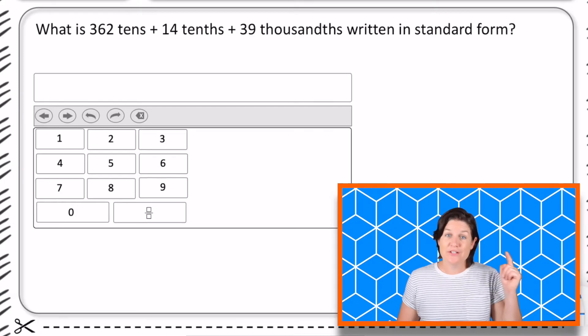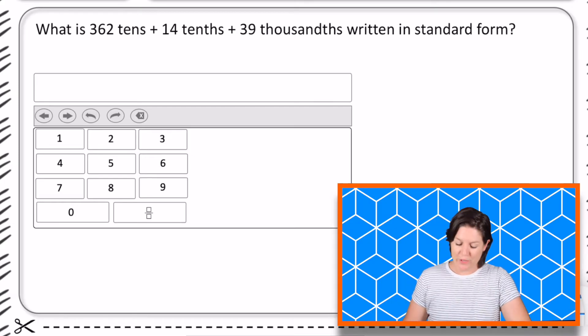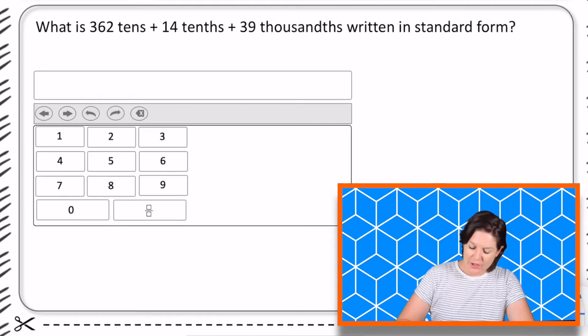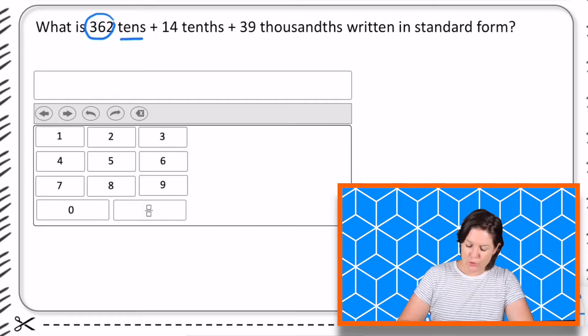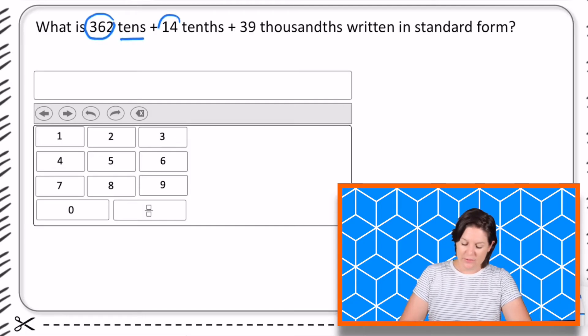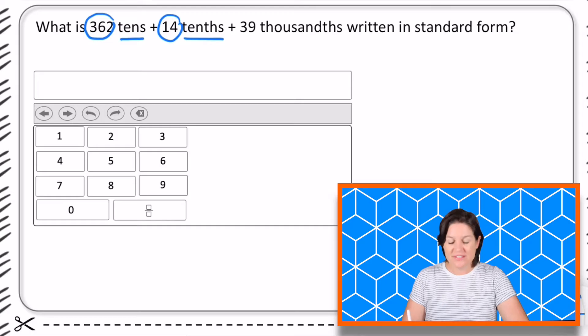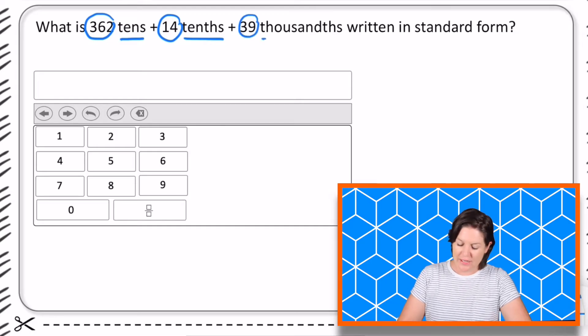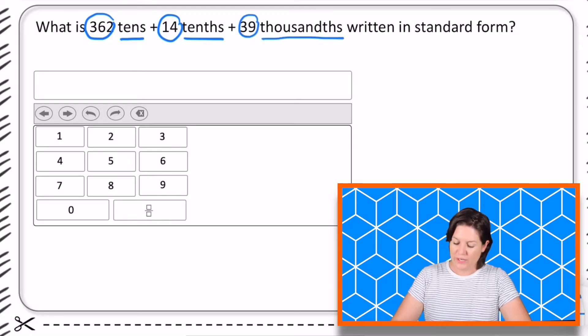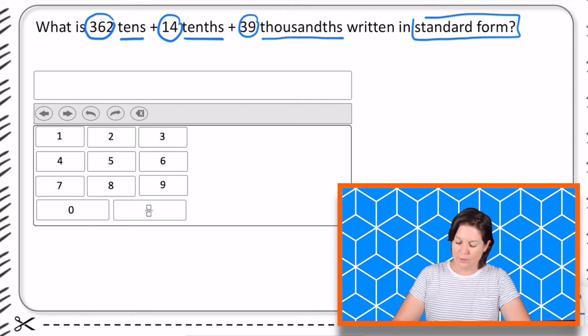The focus question type for this week is, drum roll please, equation editor. Let's not waste any more time. Let's get to it and let me teach you. All right fifth grade, here is your problem of the week. It says what is 362 tens plus 14 tenths plus 39 thousandths written in standard form.